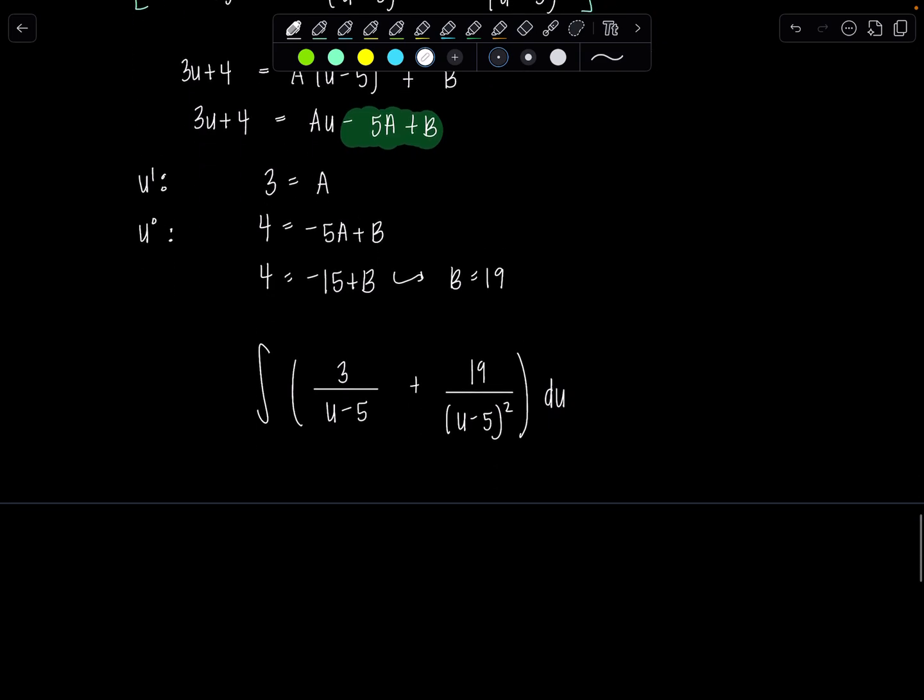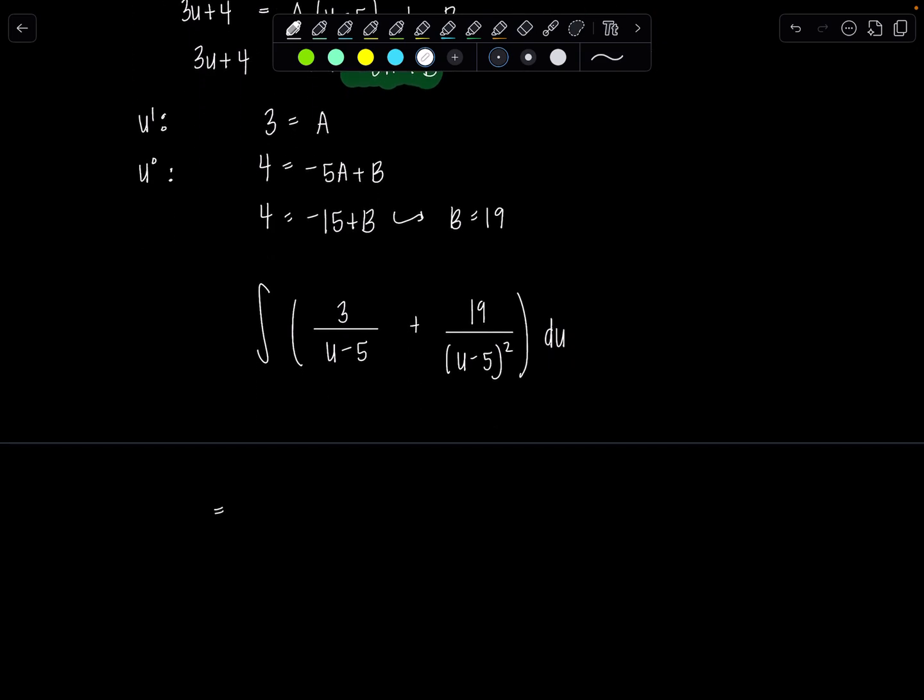Perfect. Okay, we're ready to take our antiderivatives. So the antiderivative of 3 over u minus 5 is going to be 3 ln absolute value u minus 5.